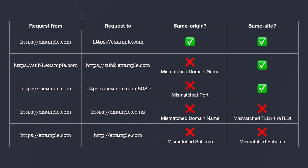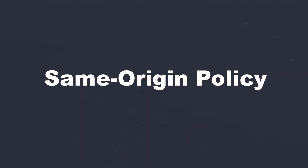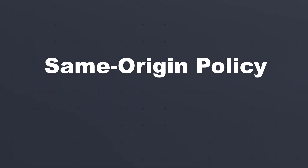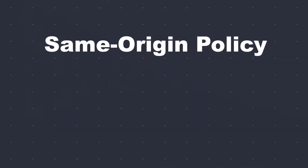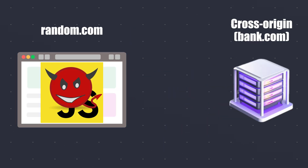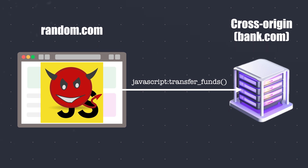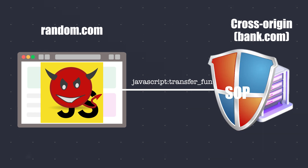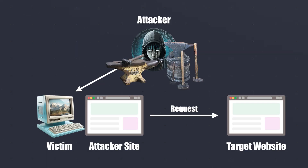Now that we've covered the concepts of same-site and same-origin, let's look into another fundamental security principle that plays a crucial role in web security: the same-origin policy. The same-origin policy is a security feature implemented by web browsers. It restricts websites from interacting with the data of another site. The SOP ensures that scripts running on pages from different origins can't interact with each other.